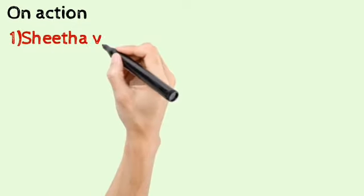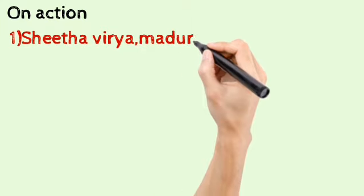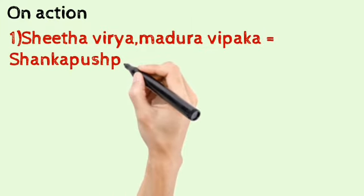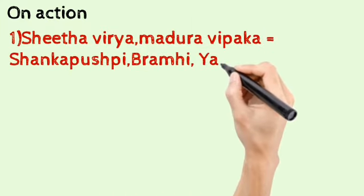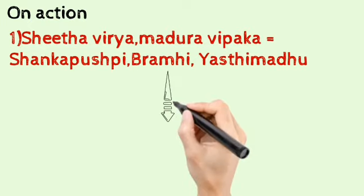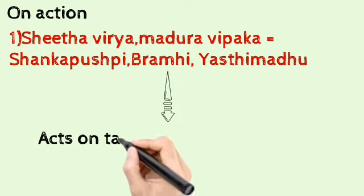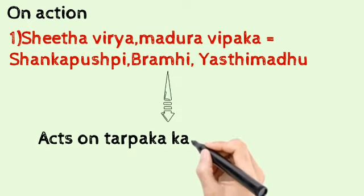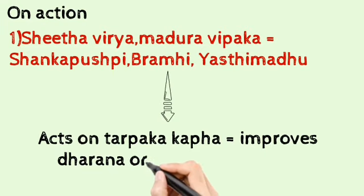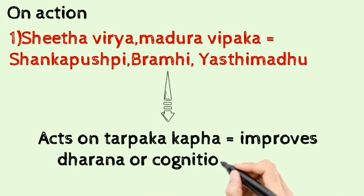Based on mode of action, we can classify the Medhya Rasayana into Sheetavirya Madhura Vipaka Dravyas, which includes Shankapushpi, Brahmi and Ashwagandha. These drugs will act over the Tarpaka Kapha and help to improve the Dharana, or Cognition.